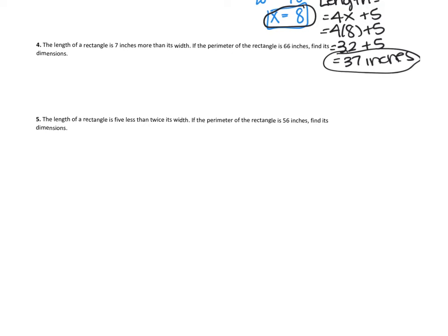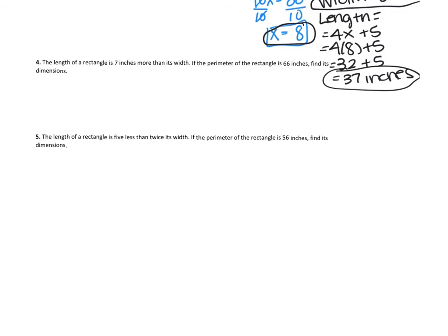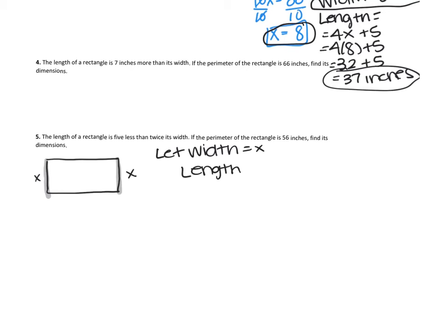Let's do number five together. This one says the length of a rectangle is five less than twice its width. If the perimeter of the rectangle is 56 inches, find its dimensions. Again, I have my widths here and here, and I'm just going to let them be called X. We're going to use the problem to figure out what the length should be. 'Less than' means to subtract.